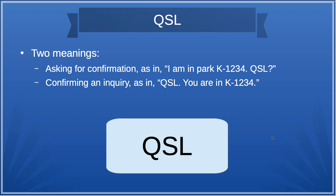The very first one we can learn is QSL. It has kind of two meanings. First, it can be a question — as in, I'm in Park K1234, QSL? If you listen to Parks on the Air or do any Parks on the Air hunting or activating, you've probably heard something like that. It can also be used to confirm an inquiry — as in, QSL, you're in Kilo 1234. That is QSL, and you'll hear it a lot.